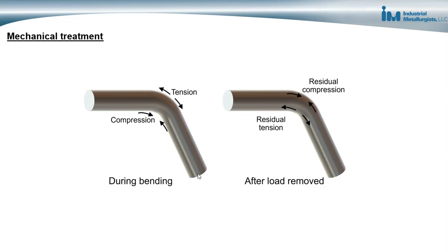Consider the example of a metal bar being bent. During bending, the outer portion of the bend is in tension and the inner portion is in compression. When the forces are released, the metal tries to relax — the elastic component of deformation tries to go to zero — and so the bar tries to unbend a little bit.